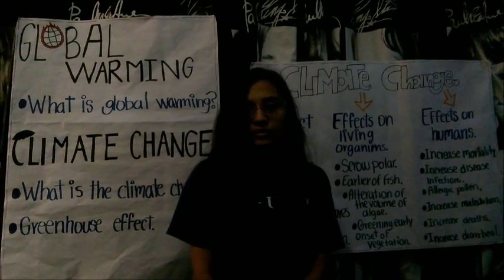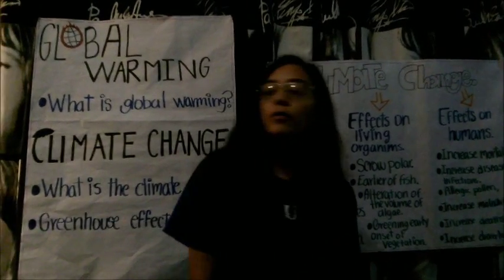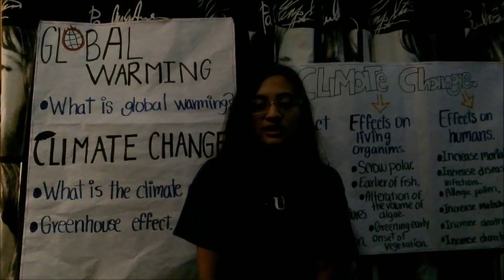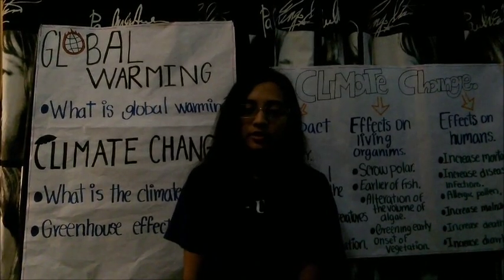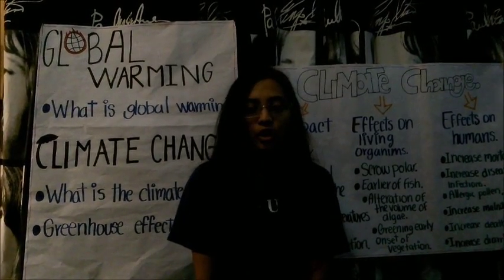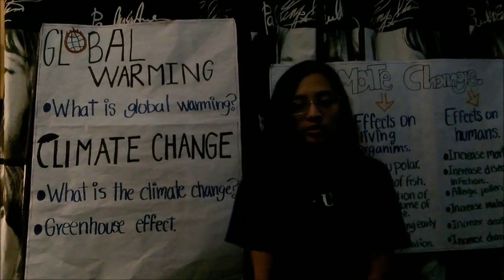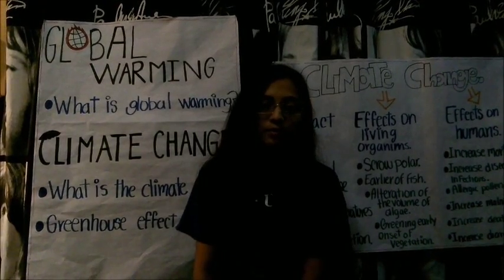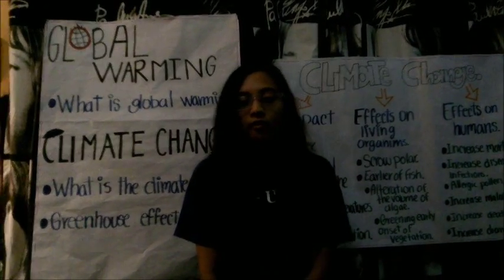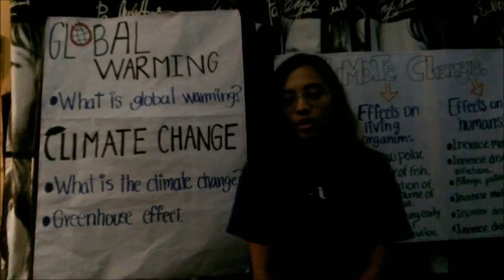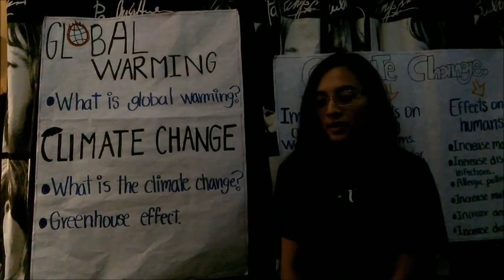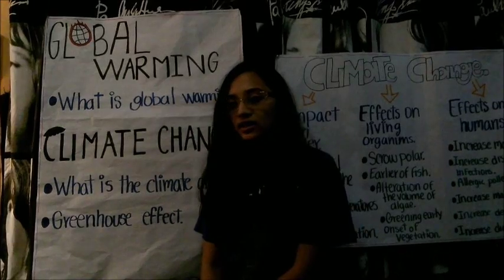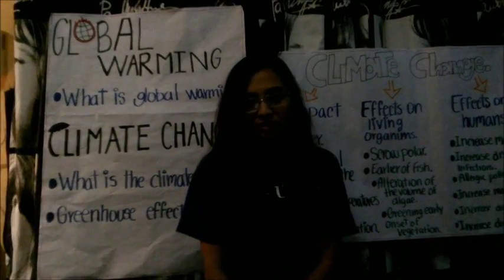Now I want to talk about global warming. Global warming is the increase of Earth's average surface temperature due to the effect of greenhouse gases, such as carbon dioxide emissions from burning fossil fuels or from deforestation, which trap heat that would otherwise escape from Earth. This is a type of greenhouse effect.